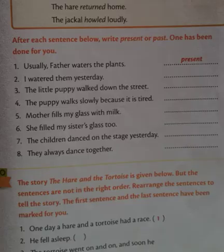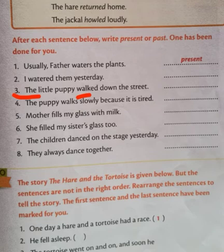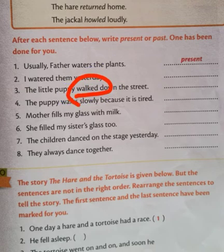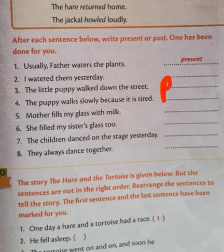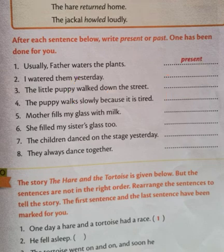Third sentence: 'The little puppy walked down the street.' The verb is 'walked,' which is the past form of 'walk.' This sentence belongs to past tense, so we write 'past' — P-A-S-T. We can easily identify the tense by looking at the form of the verb.